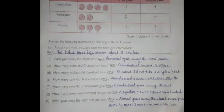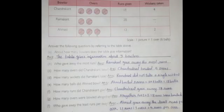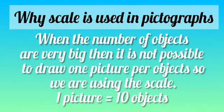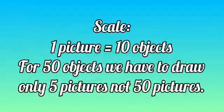Thus we can see that a lot of information can be obtained from the pictures in this table. Such tables which represent information using pictures or icons are called pictographs or pictograms. When the number of objects is very large, it is not possible to draw 1 picture per object, so we use a scale. For example, with a scale where 1 picture equals 10 objects, for 50 objects we draw only 5 pictures, not 50. To make a pictograph, we must choose an appropriate scale.